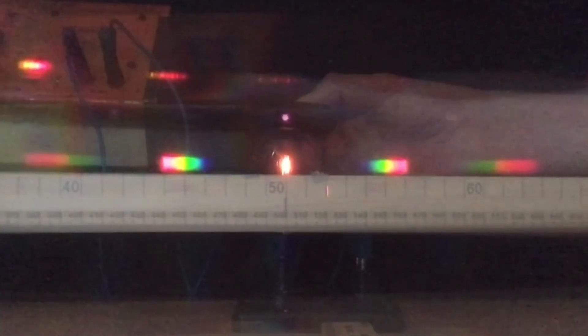All I need to do now is pause the video when I can see the first order fringe from the infrared and I should be able to calculate its wavelength.